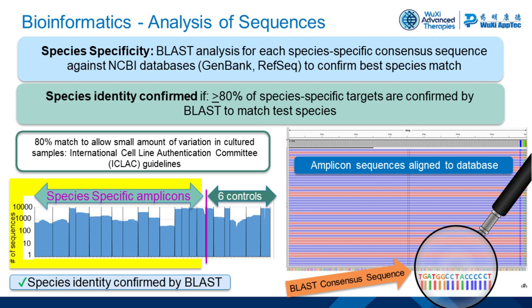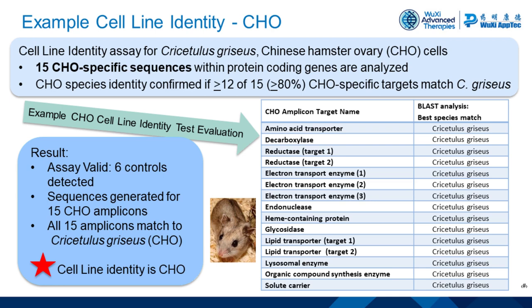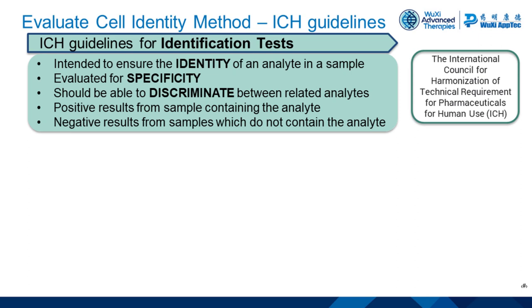To show you an example, the next few slides present the CHO assay developed for identity of Chinese hamster ovary cell lines. For the CHO assay, we analyzed 15 sequences located within protein coding genes that are specific to the CHO species, Cricetulus griseus. Using the 80% criterion, CHO species identity is confirmed if at least 12 of the 15 targets match to Cricetulus griseus. The table on the right is an example of a BLAST result — each of the 15 species-specific amplicons matches to Cricetulus griseus, confirming identity to CHO.